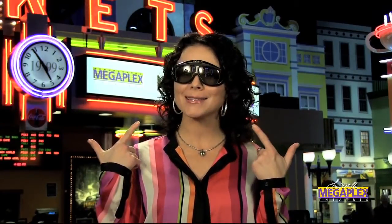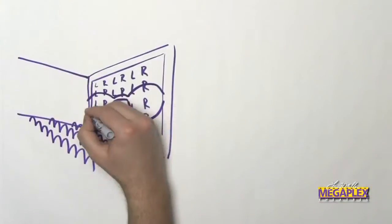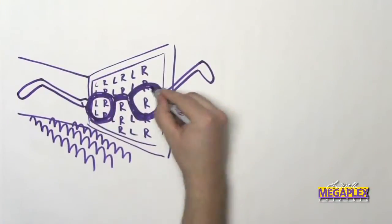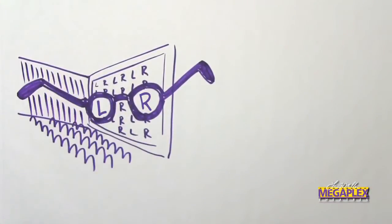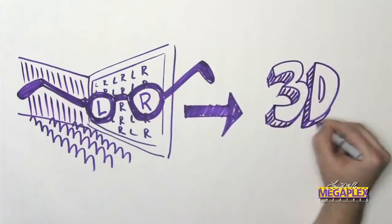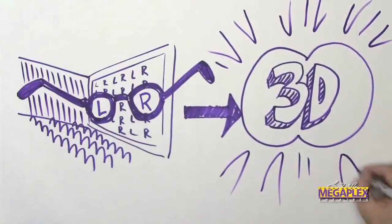And here's where these cool glasses come in. They channel the left image exclusively to your left eye, and the right image to your right eye. And your brain hooks these views together, and voila! A single 3D image is created.